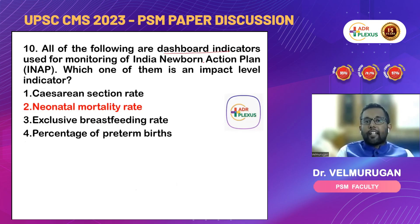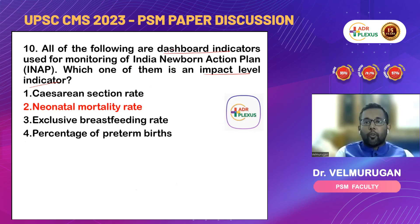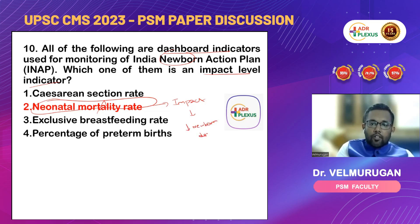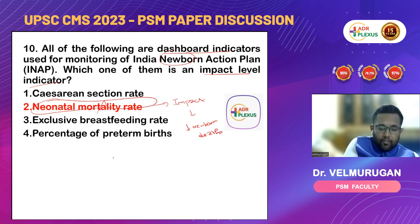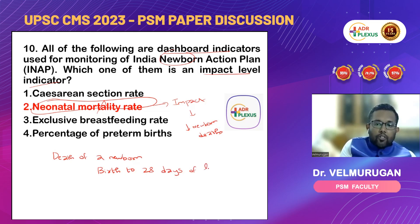Next question: which of the following are dashboard indicators for monitoring of the India Newborn Action Plan? The impact indicator is the main outcome you are going to see for the newborn — which is neonatal mortality. So the main impact of the newborn action plan is to reduce newborn deaths. A newborn death is the death of an infant between birth and 28 days of life — that is called a neonate — and this is measured by the neonatal mortality rate.